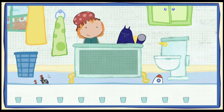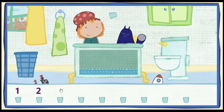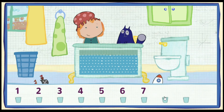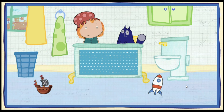Click on each container to pour it in. Let's add this one and then go down the line. One. Two. Three. Four. Five. Six. Seven. Eight. Nine. All right! The tub is full. You estimated just right.